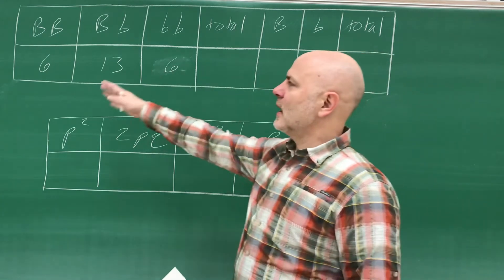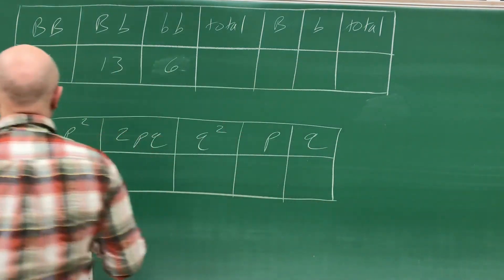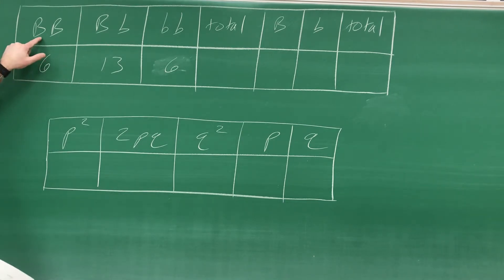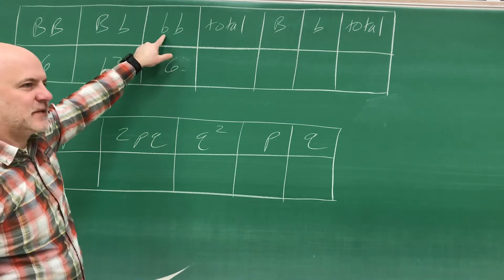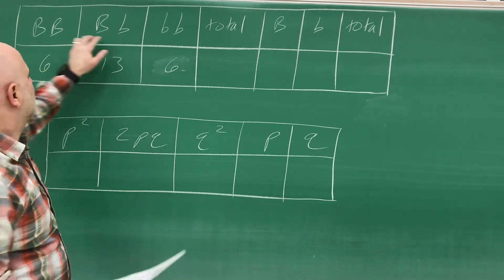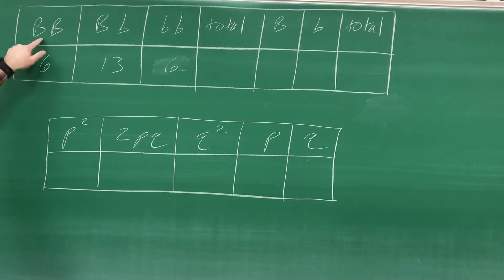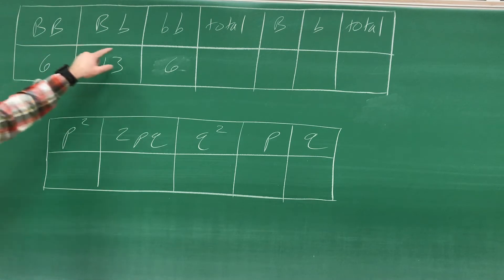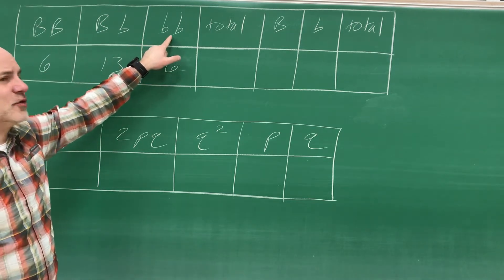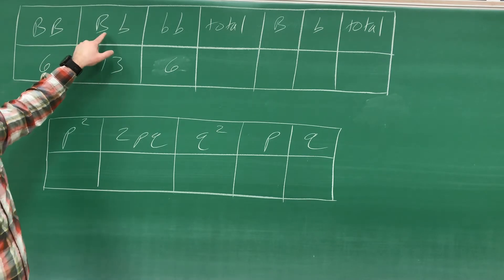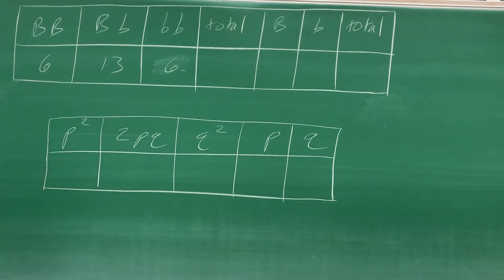So these are your raw numbers. If you get two beans that are black beans, they would be big B and big B. The big B represents the black bean. The little B represents the white bean. So if you pull out of the bag two black beans, that individual would be big B, big B. If you pull out two white beans, that individual would be little B, little B. And if you pull out one of each, they would be heterozygous, big B, little B.